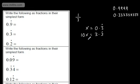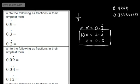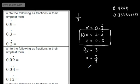So I'm going to rewrite underneath: x is equal to 0.3 recurring. If I subtract downwards, 10x minus x will give me 9x. 3.3 recurring minus 0.3 recurring is just going to give me 3. Dividing both sides by 9, x is going to be equal to 3 ninths, which of course will cancel down to 1 third. And that's nice and straightforward.